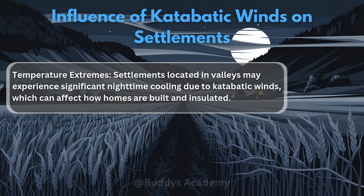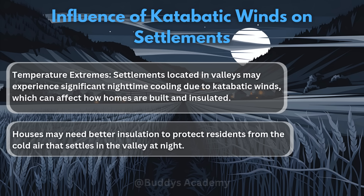The next influence will be temperature extremes. Settlements located in valleys may experience significant nighttime cooling due to katabatic winds, which can affect how homes are built and insulated. Houses may need better insulation to protect residents from the cold air that settles in the valley at night — things like underfloor heating in order to stay warm.